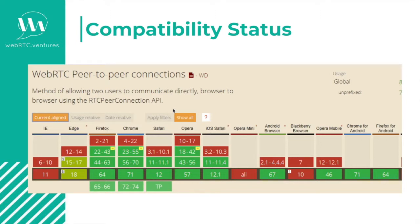Now let's talk about compatibility. This is relevant because each browser implements WebRTC independently, so it's important to know where things will work as expected and where they are expected to fail. As you can see, there are a lot of green squares. This is good because it's telling us that adoption is increasing. A few years ago there weren't that many of these, so be aware that this chart will be changing.